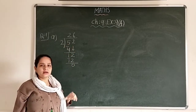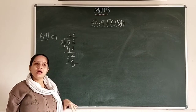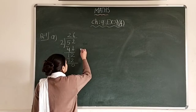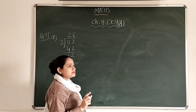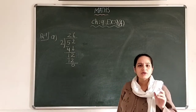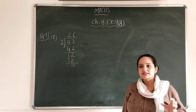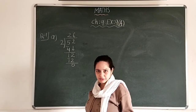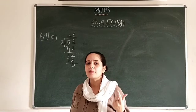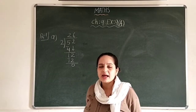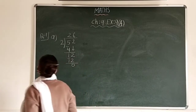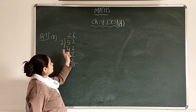So, see the 2s table: 2 1s are 2, 2 2s are 4, 2 3s are 6. Since 6 is greater than 5, you cannot write 2 3s are. The step just before that — 2 2s are 4 — is what we use. So we write 2 in the quotient and 4 below 5.